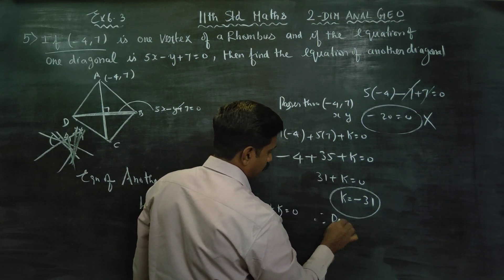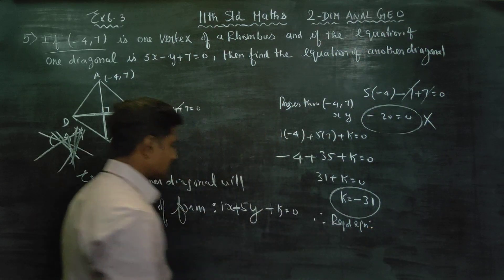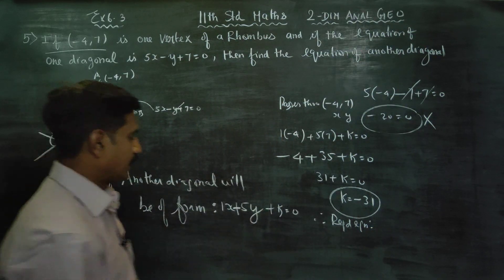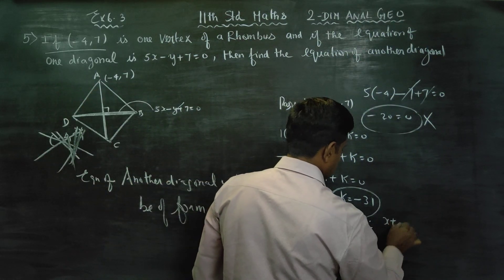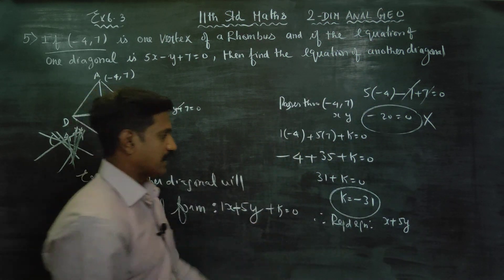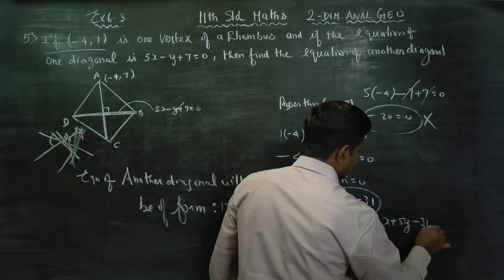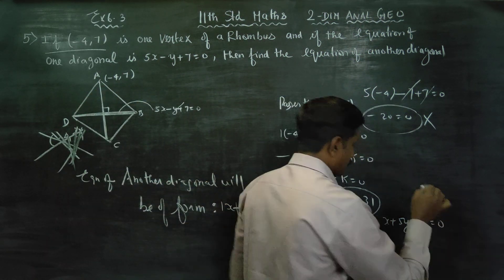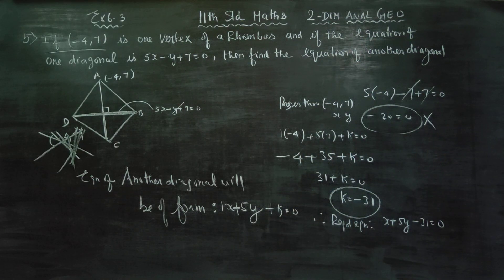Therefore, the required equation of another diagonal is x plus 5y minus 31 is equal to 0. Okay, thank you.